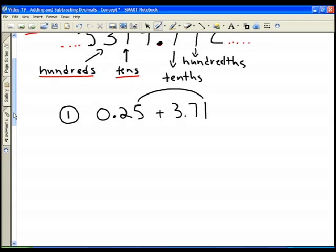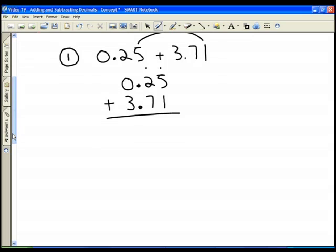The hundredths column has to be added together, the tenths column has to be added together, and so on. And to accomplish this, what we do is we stack the two decimals so that the decimal places are in a line vertically, and that way all of the columns will match up. And then we simply just add the columns down.